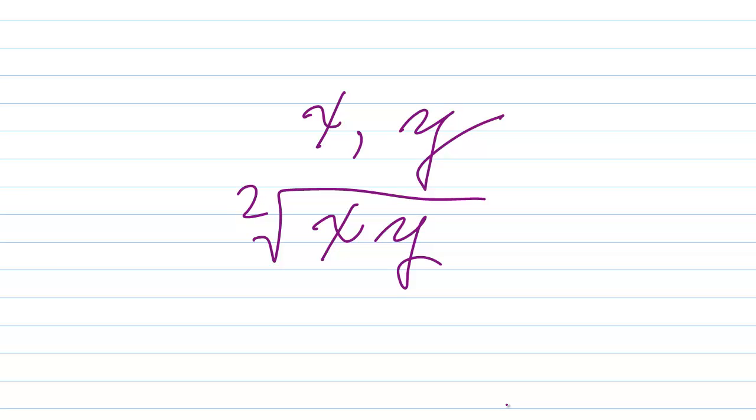In the geometric mean you multiply up all the numbers and then find the number of numbers root of that product. And with two numbers it's usually just 2.